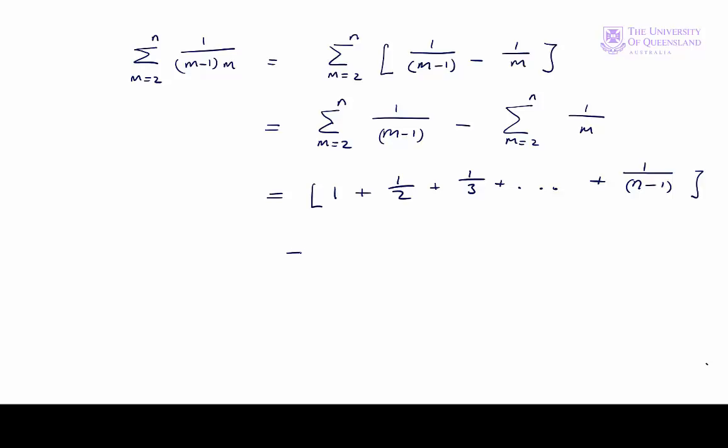We can minus, well, 1 over m when m equals 2, we'll have a half. So let's put that there. And then the next term will be a third, plus... When m equals (n minus 1), we'll have (n minus 1). And then the last term will be 1 over n.